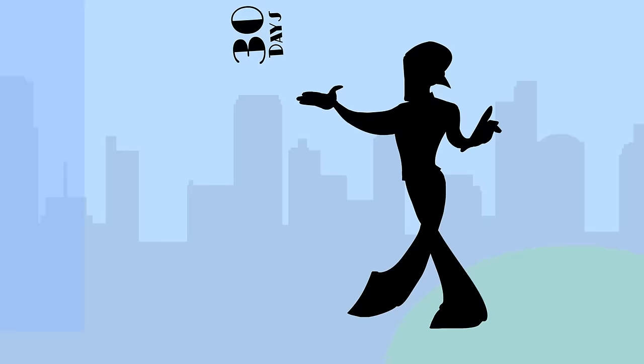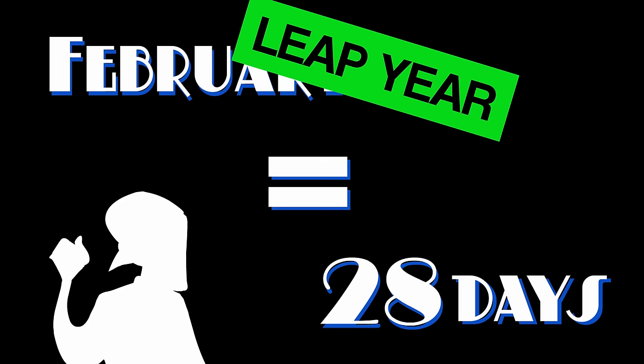January, March, May, July, August, October, December — all have 31 days, all have 31 days. April, June, September, and November — all have 30 days, all have 30 days. February has 28 days, but when it's the leap year, it's got 29 days.